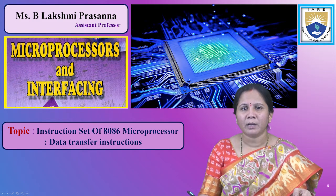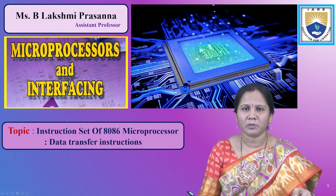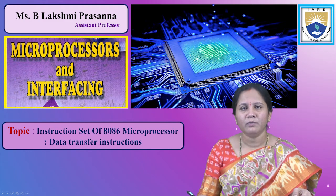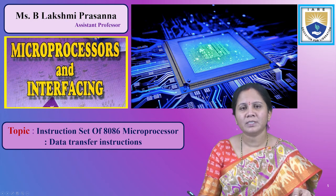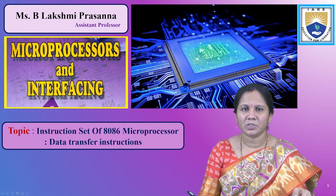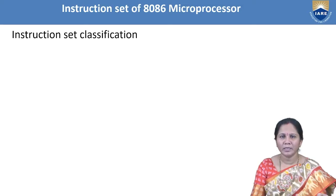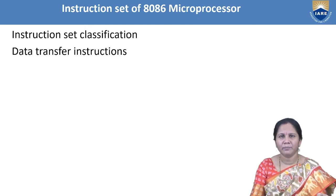In the previous lecture, we have seen about the addressing modes. Addressing modes indicates the way of locating data or operands, or in how many ways the operands can be accessed by an instruction. Now, coming to the instruction set of the 8086 microprocessor, in this session we are going to see about data transfer instructions and the instruction set classification in detail with examples.